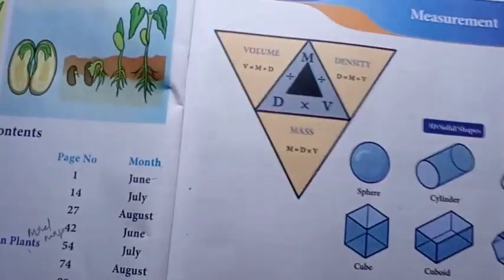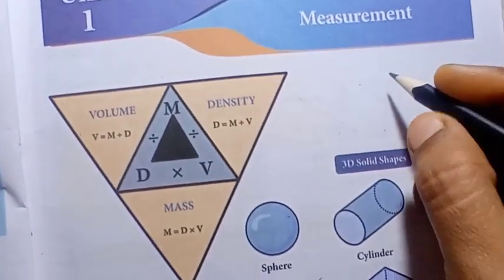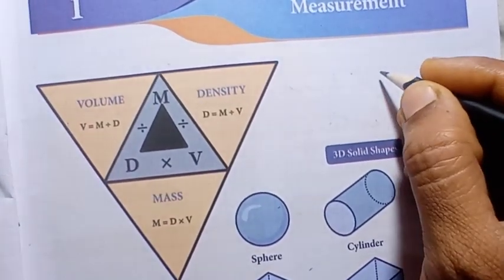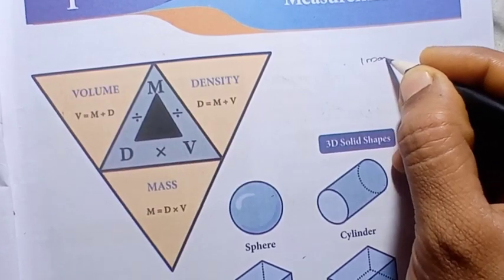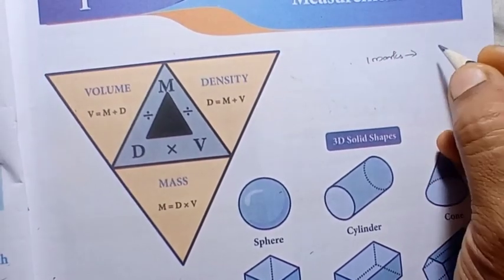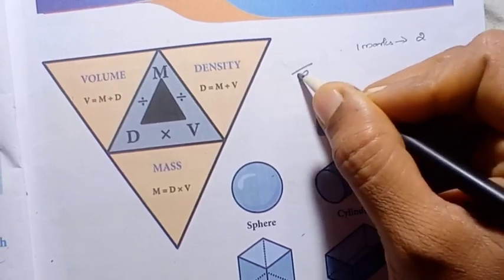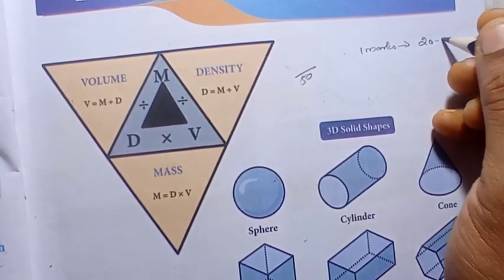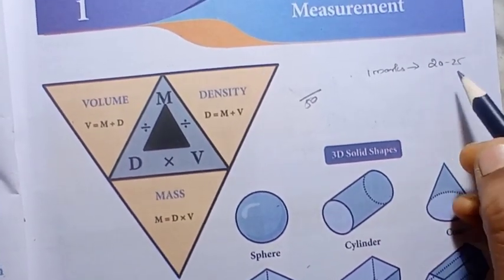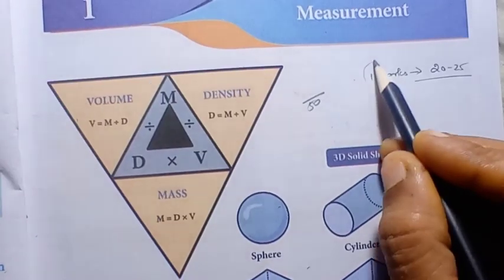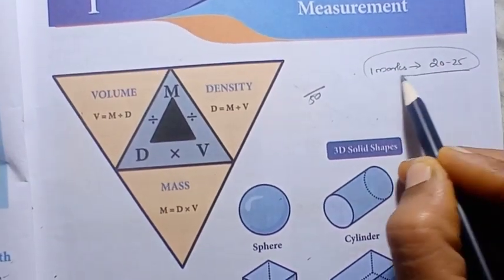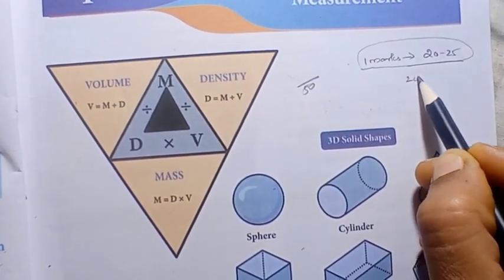First, Unit 1 Measurements. For the first midterm test, the first marks score - one mark questions are full, nearly 20 to 25. For example, out of 50, 20 to 25 marks is one marks. So one marks is full. If you are studying all lessons, learn all the one mark questions.